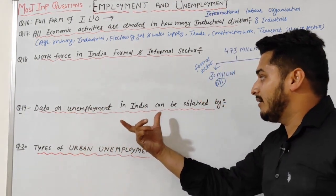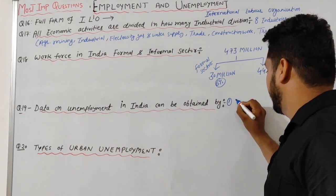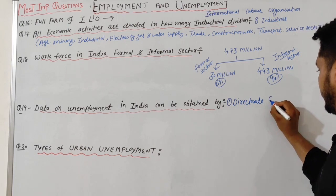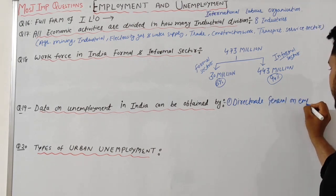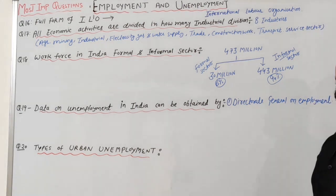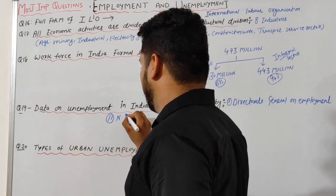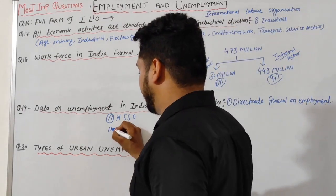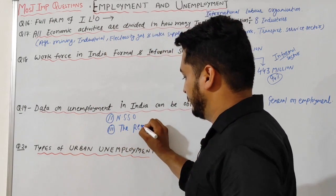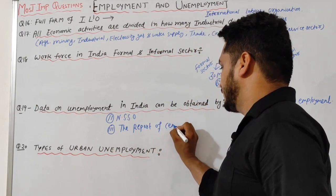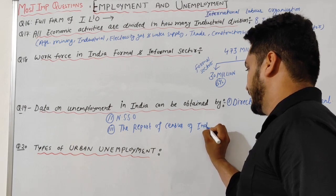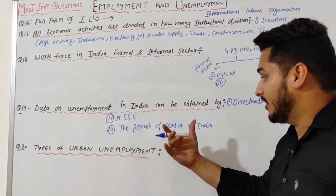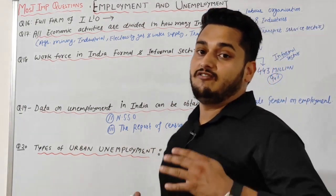Question 19: Data on unemployment in India can be obtained from: first, the Directorate General of Employment; second, NSSO; third, the Report of the Census of India. The last census of India was taken in 2011 and the next census was to be taken in 2021.